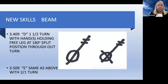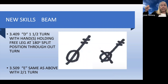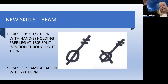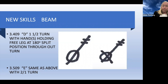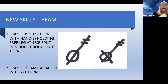A couple new things on balance beam: the D skill of a turn holding the leg with a 180-degree split throughout. What has changed is that any time they hold their leg up and do the turn, that flexibility position should be at a 180-degree split. They will still get credit for the turn, like the D turn of one-and-a-half turns holding the leg, but if it's not quite at a 180 split, we can take a deduction. So we're expecting that flexibility.